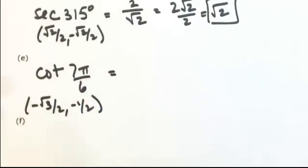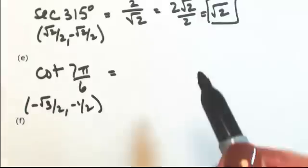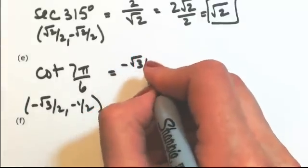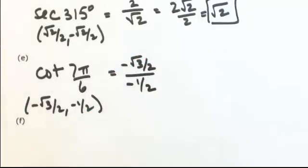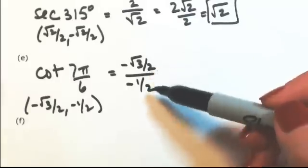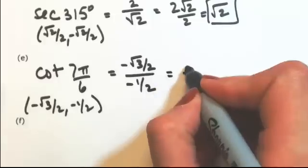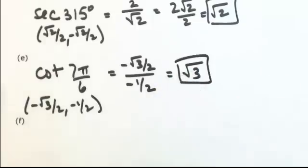Okay, cotangent is cosine over sine, so x over y. So this becomes positive. Because we're dividing top and bottom by 2, the 2 would just cancel, leaving us with positive √3.